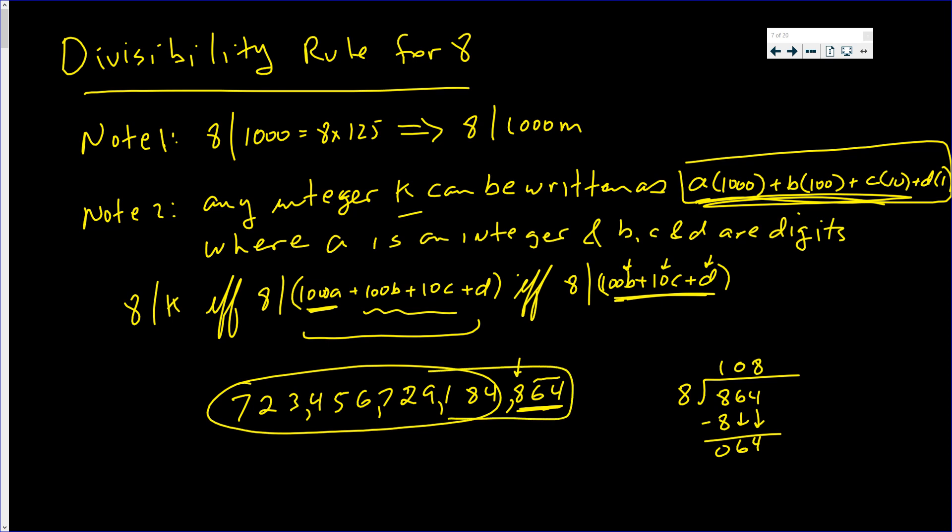Sorry, the whole number. Why? Because that whole number is 7, 2, 3, 4, 5, 6, 7, 2, 9, 1, 8, 4 times 1000. Plus 864. Well, does 8 go into this sum? Well, if 8 goes into the first number, that first number, it goes into it this very long number times 125 times. So, 8 has to go into that number. So, the divisibility rule for 8 is just to verify whether or not 8 goes into the last three digits.